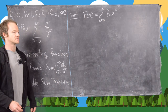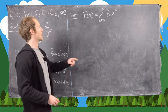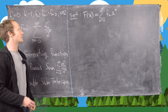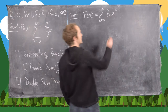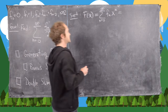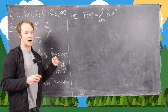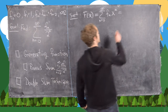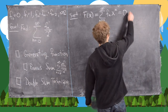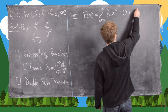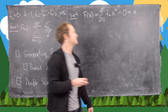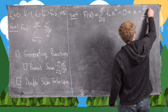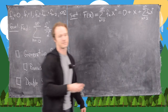We want to make use of the recursion, but it only applies for n ≥ 2. So we rewrite F(x) by pulling out the first two terms: f(0)=0 and f(1)·x = x, leaving us with the sum from n=2 to infinity of f_n · x^n.